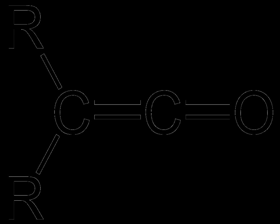A ketene is an organic compound of the form R₂C=C=O. Ketene also refers to the specific compound CH₂=C=O, the simplest ketene molecule, which is occasionally called ethenone.